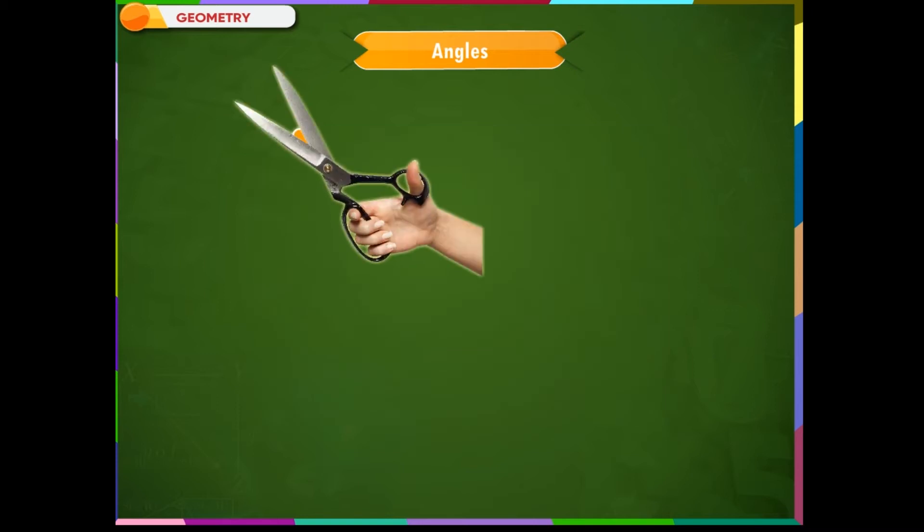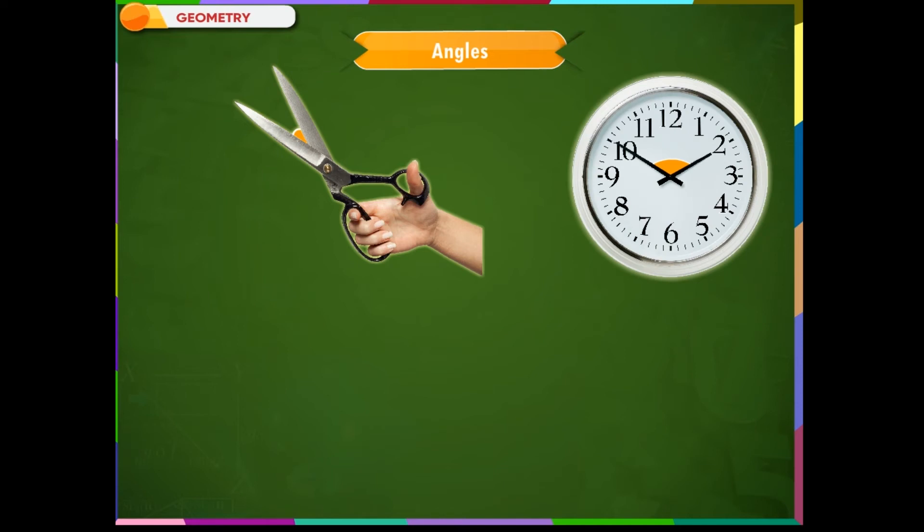Look at this simple scissor that shows an angle. The angle between the two hands of a wall clock. The angle formed here in a chair.